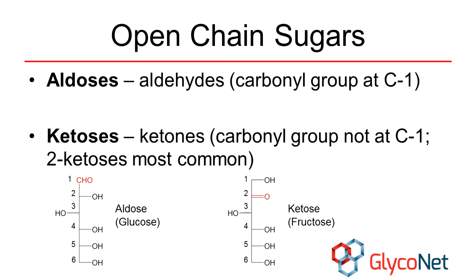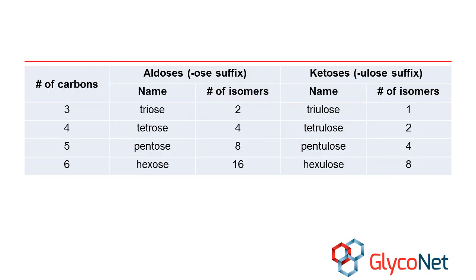Ketoses, such as fructose, with the carbonyl group at carbon 2, are the most common. Notice that both of these sugars are D-sugars, as the C5 stereocenter furthest from the carbonyl group is on the right-hand side of the molecule. Aldoses and ketoses are distinguished by the ending of their names. Aldoses end in "-ose", while ketoses end in "-ulose".